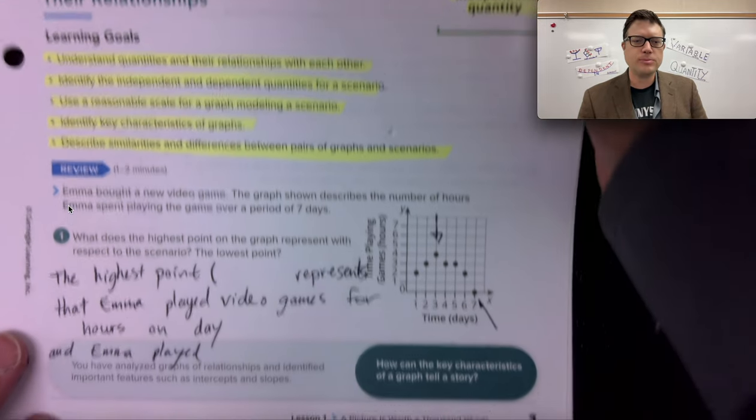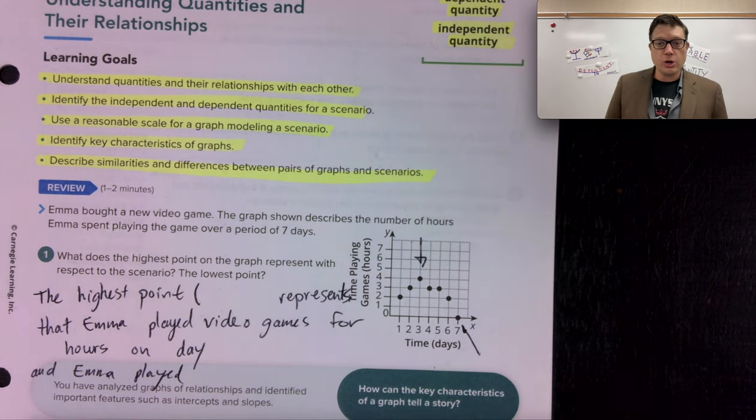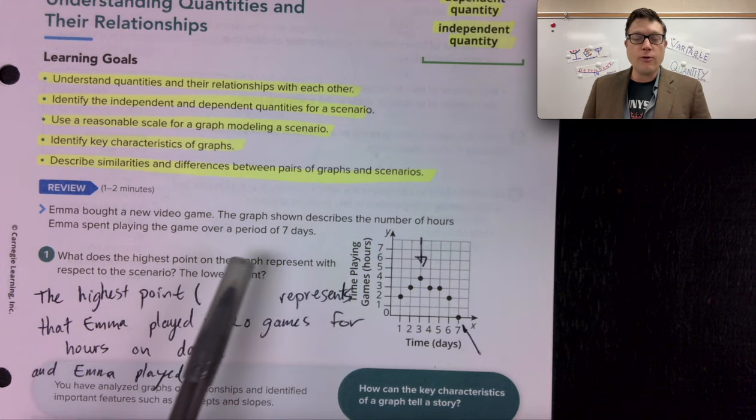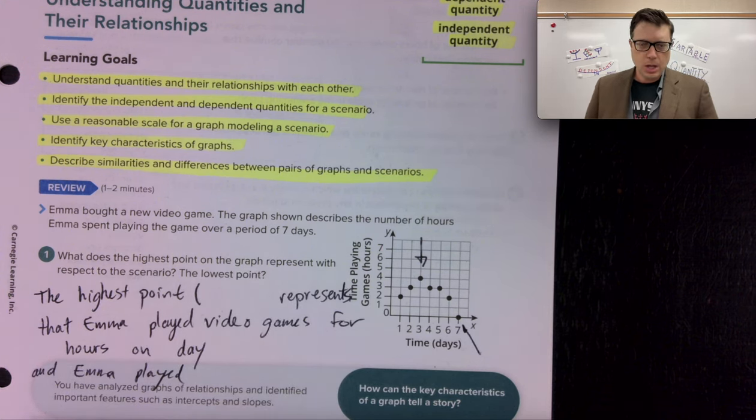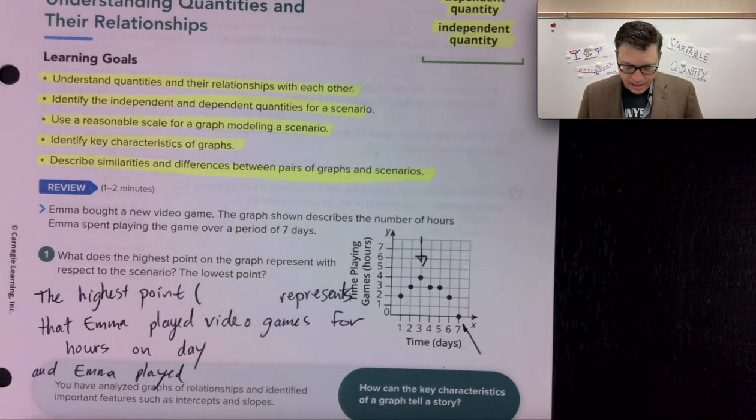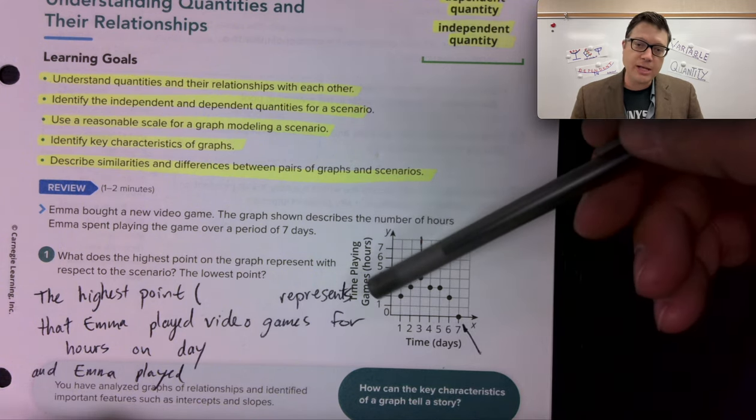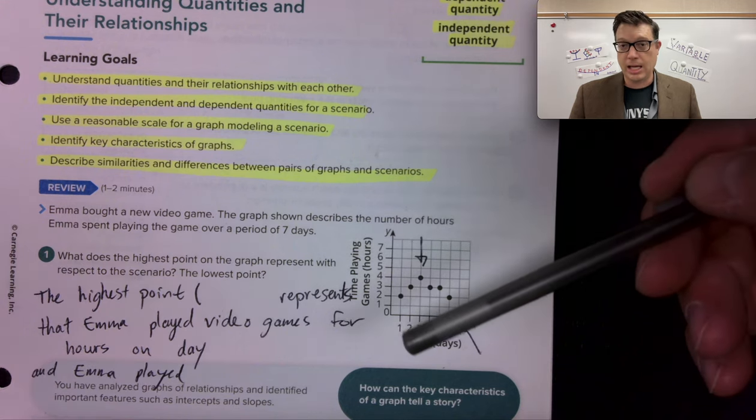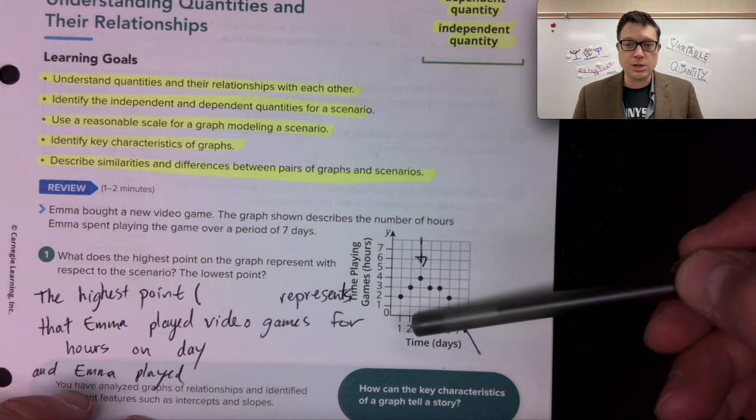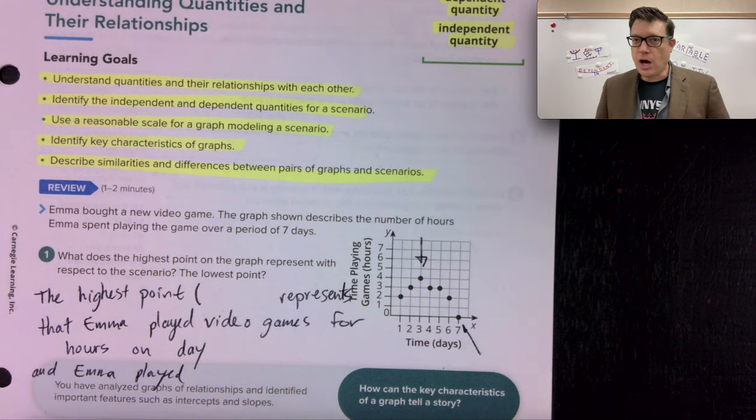Let's talk about Emma. Emma bought a new video game. And in this picture, the graph shows, describes the number of hours Emma spent playing the game over a period of seven days. So we can see in this graph right here that we're tracking day one, day two, day three, all the way up to day seven. And then over here on the side of the graph, we're tracking the time spent playing the game in hours. So on day one, she played the video game for two hours. Day two, she played the video game for three hours. Are you with me on that?